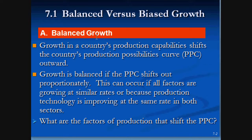Balanced growth, or growth in a country's own production capability, shifts the country's production possibility frontier or curve outward. New technologies, an increase in resources available, an increase in labor — all these things can actually shift the production possibility curve outward to expand your horizons.